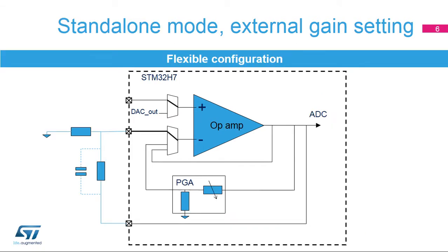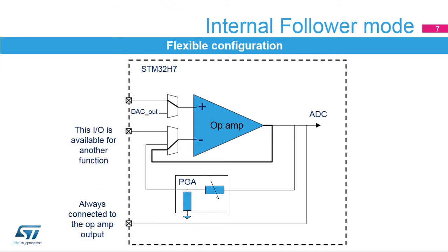The operational amplifiers support the default configuration using the factory trimming values and operate in normal mode for highest performance. The operational amplifier can be configured as an internal voltage follower, where the internal switch connects the output to the inverting input.